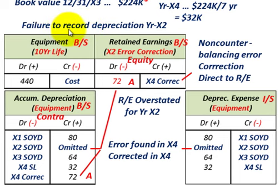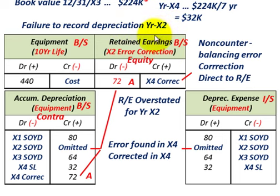This is where we come into the non-counterbalancing error. There was a failure to record the depreciation expense in year X2. Now we're in year X4, two years later, where we're going to correct the error. At the end of year X4, we determined that we forgot to record the depreciation for year X2.